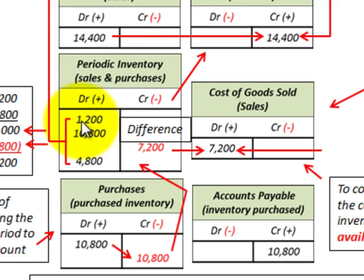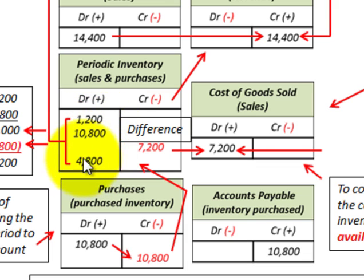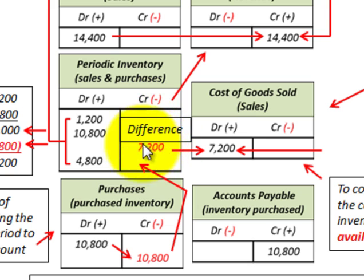Looking at our inventory account again: the beginning inventory we recorded in our periodic inventory account was $1,200, and the $10,800 was purchases for the period. We add those two amounts and subtract $4,800 of ending inventory. The difference of $7,200 is the inventory cost charged against those sales, with a credit to periodic inventory and a corresponding debit to cost of goods sold for $7,200.